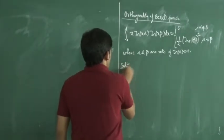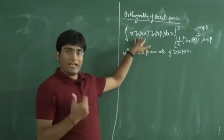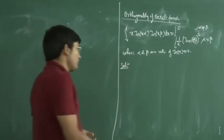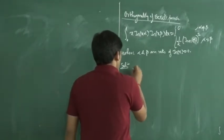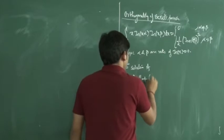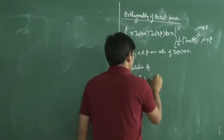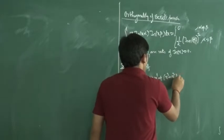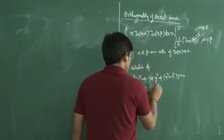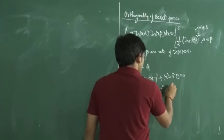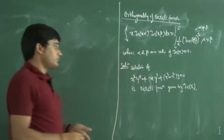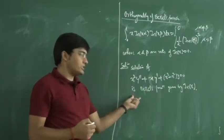In the solution, in place of Jn(x) we are getting Jn(xα). Let us discuss this Jn(xα). We know that the solution of the Bessel differential equation x²y'' + xy' + (x² − n²)y = 0 is the Bessel function, given by Jn(x).